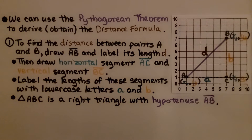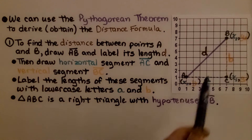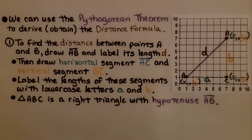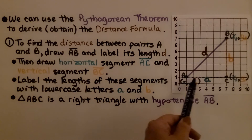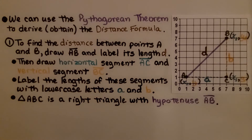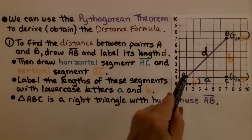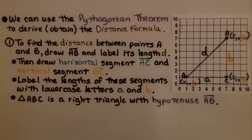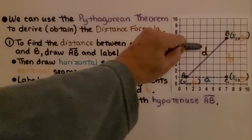We can use the Pythagorean theorem to derive — that means obtain — the distance formula. The first step is to find the distance between points A and B. We draw segment AB and label its length D. Then we draw horizontal segment AC and vertical segment BC. We label the lengths of these segments with lowercase letters a and b. Notice the points are labeled with uppercase letters and the sides with lowercase letters. Triangle ABC is a right triangle with hypotenuse AB, which we have now labeled D.